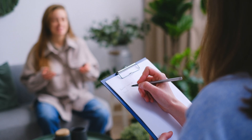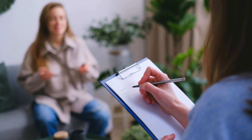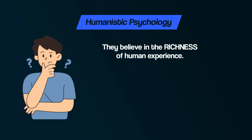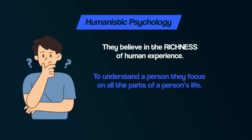This included where they lived, what their job was, what happened in their childhood, and how much stress they had in their lives — different contributing factors interacting. Humanistic psychologists believe in the richness of human experience, so to understand the person they focused on all the parts of a person's life. To explain human behavior in a reductionist way, for them, would be to dehumanize a person — to view them as less than the complete human being that they are.